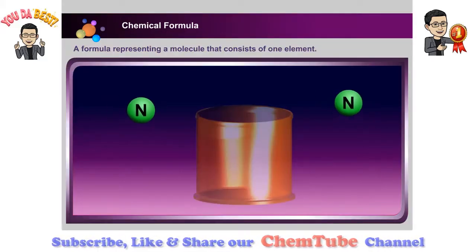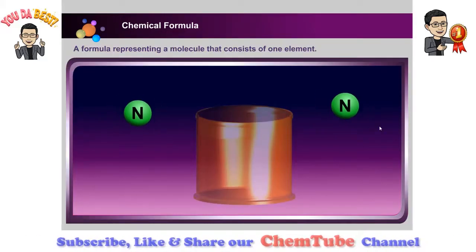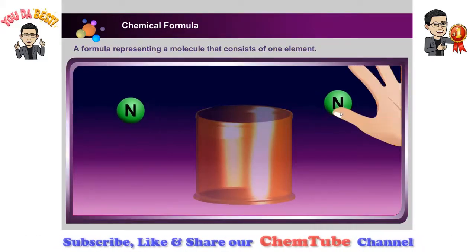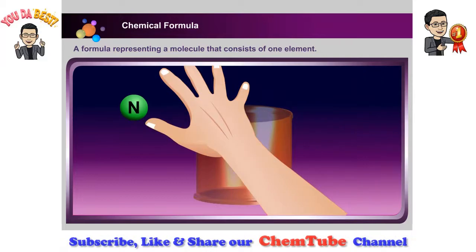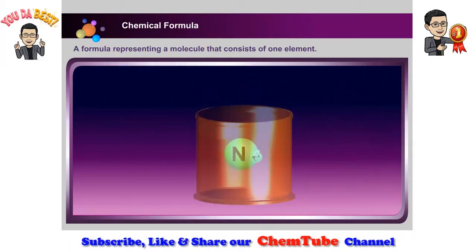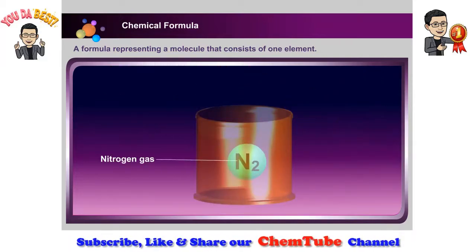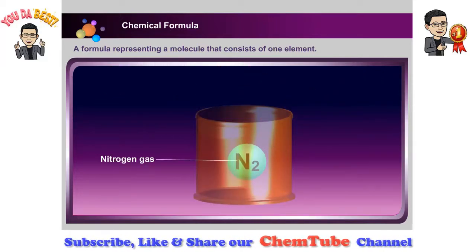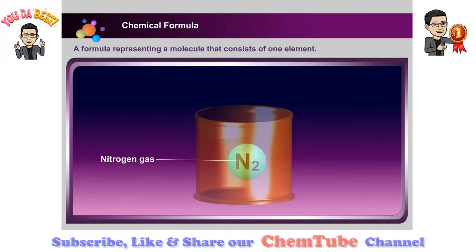Catch the two atoms and drop them in a jar. A formula represents one molecule of an element. It shows which element the molecule contains and the number of atoms in each molecule.